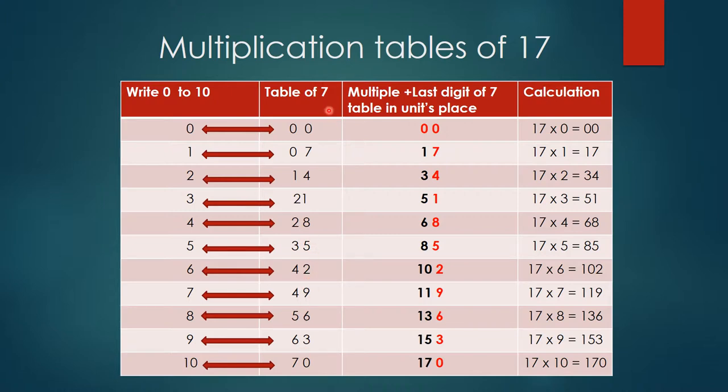Alright, now the next step is very simple. Go to the previous line or previous column or tens place of this 7 table. Now simply add that to the numbers what you have written here 1 to 10. So 0 plus 0 is 0, so I have written 0 here. 0 plus 1 equals 1. Observe the arrows. So 2 plus 1 is 3, so I have written 3 here. Then 3 plus 2 is 5, so I have written 5 here. 4 plus 2 is 6, so 6 here. 5 plus 3 is 8, so I have written 8 here.